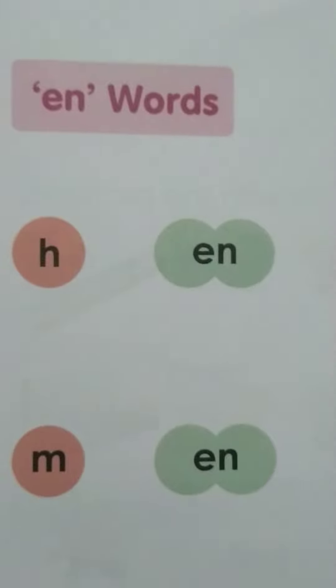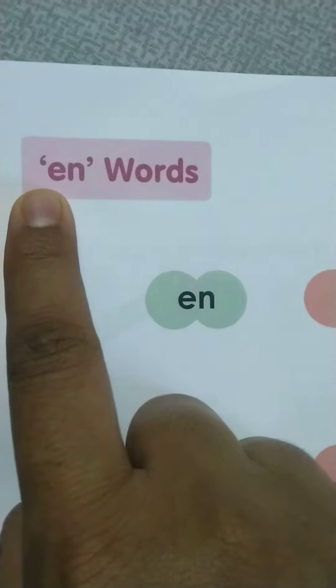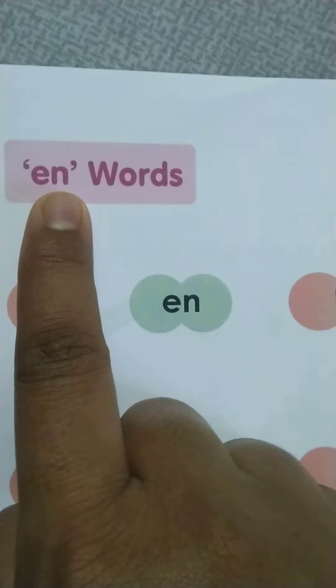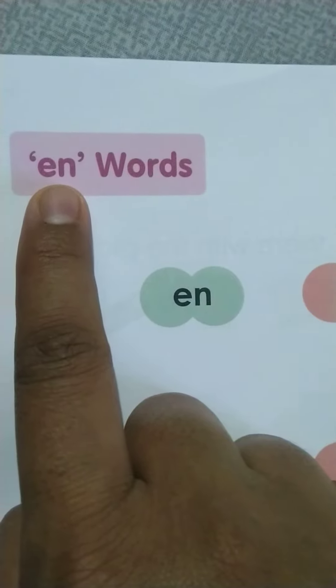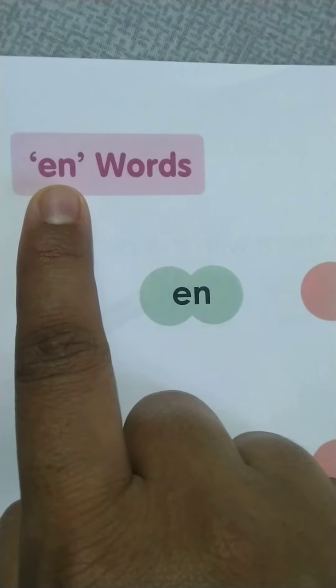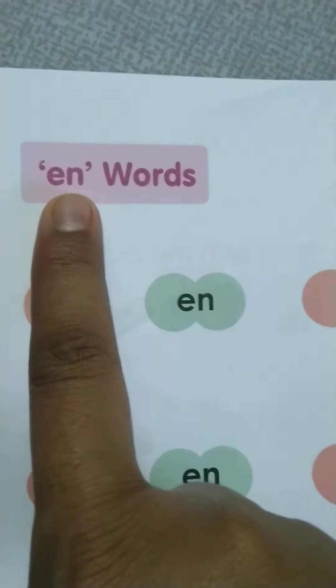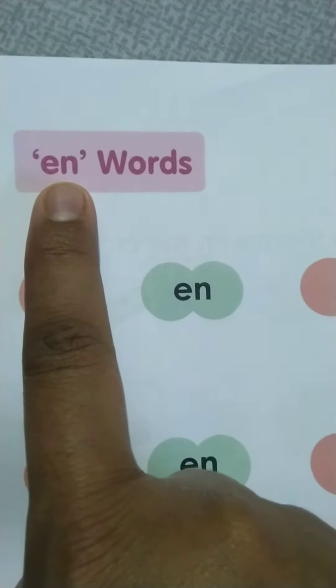Hello children, look here. Who is here? Meet E and N. Together they make the word EN. Using these two letters, here we can make three letter words. Let's see.